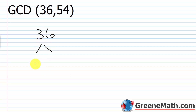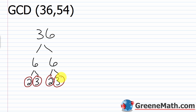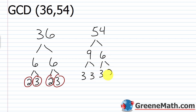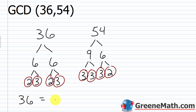Let's look at the greatest common divisor of 36 and 54. Start by finding the prime factorization for each number. For 36, I'll use 6 times 6. Six is not prime, so we continue: 6 is 2 times 3, and 2 times 3. Two and 3 are both prime, so circle all of those. So 36 is 2 × 2 × 3 × 3.